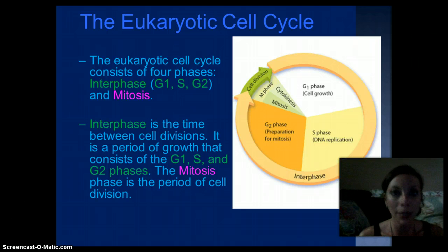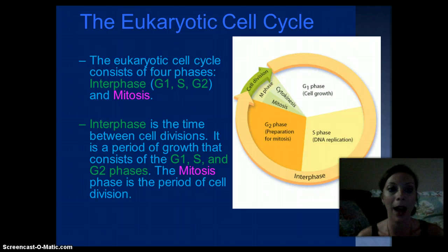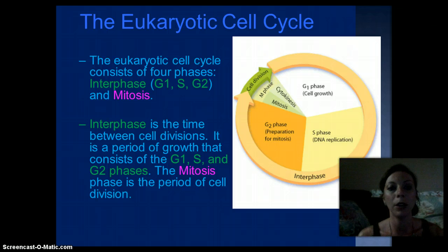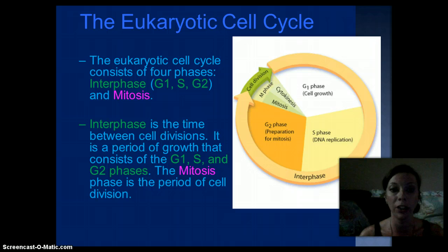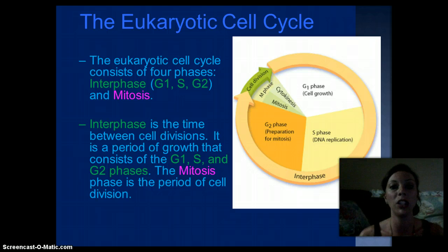Then we have mitosis, and this is when the nucleus of the cell divides. Interphase is the time between cell division — it's a period of growth and preparation for cell division. During the S phase, the chromosomes are going to duplicate. And then in G2, more preparation for cell division. Then mitosis is going to occur, which splits the nucleus of the cell.